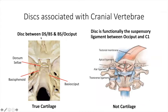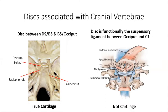There were actual discs between the dorsum sellae and the basi-sphenoid, and that disc ends up disappearing in adulthood. There's a disc between the basi-sphenoid and the occiput, which also will become a synchondrosis. Since she's analogizing this to a vertebral segment — cranial segment one, two, three — that last disc she says is functionally the suspensory ligaments between the occiput and C1. So it's not actually a disc, but to keep this model intact, she's saying the function is like a disc.